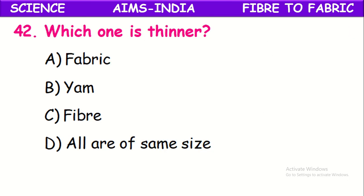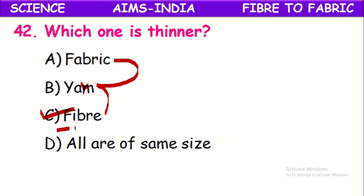Which one is thinner? Fiber is twisted and rolled to make yarn, and two or more yarns are woven or knitted to get fabric. So out of fiber, yarn, and fabric — fiber is the thinnest.